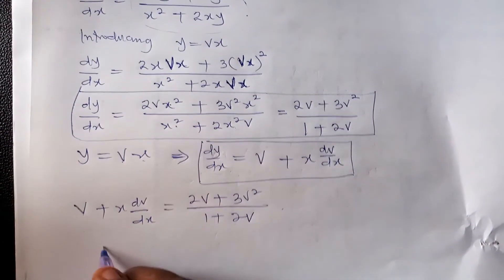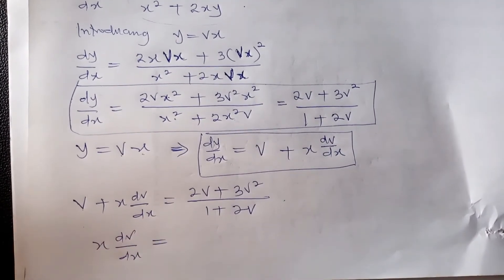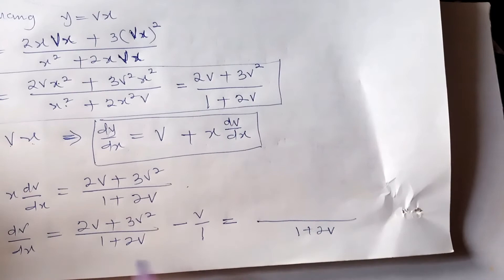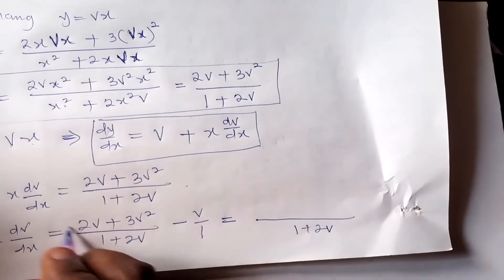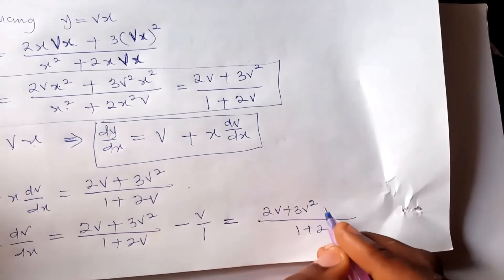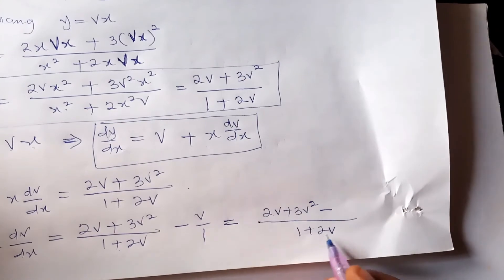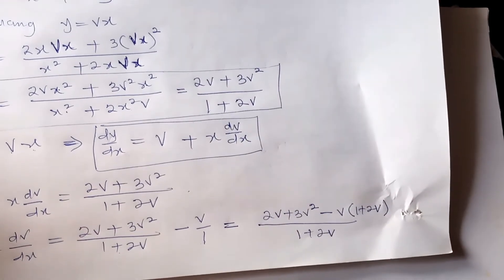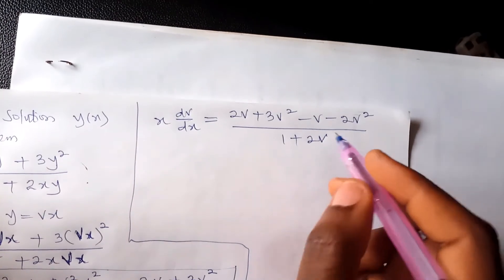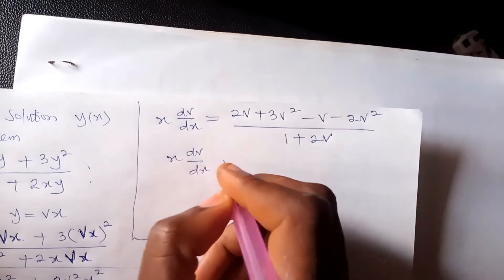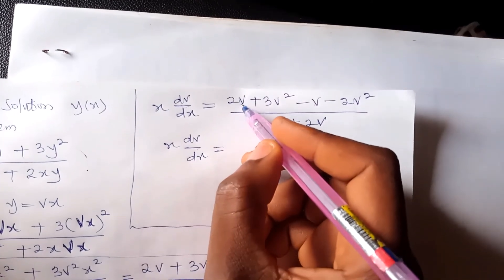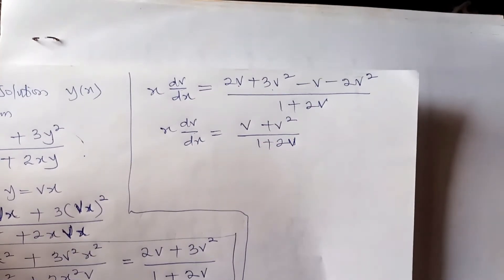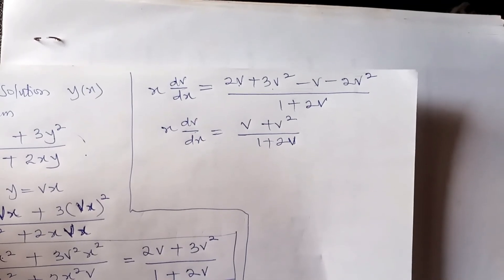Using LCM of (1 + 2v): (1 + 2v)/(1 + 2v) gives 1, times (2v + 3v²), minus v times (1 + 2v). After simplifying, x dv/dx equals the numerator simplified by taking terms away, giving us the simplified expression.